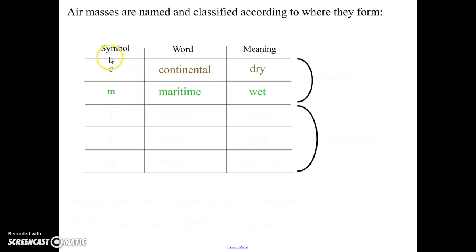So I want you to notice the c and the m again. These are going to be lowercase, and these two letters would show the humidity of the air mass.